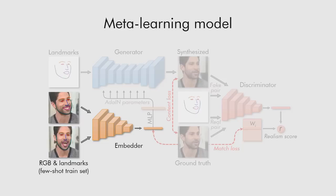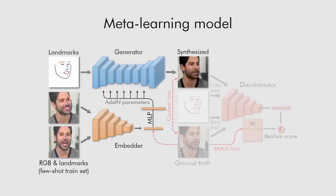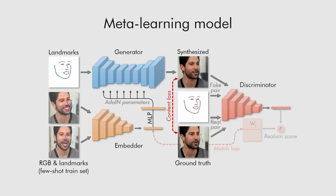These vectors are used to initialize the parameters of adapted layers inside the generator network, which maps landmarks into the synthesized video. The discriminator network assesses the realism, pose, and identity preservation of the generated frames. Better identity preservation is achieved by having a trainable embedding vector inside the discriminator for each training video. For more details, please refer to the paper.